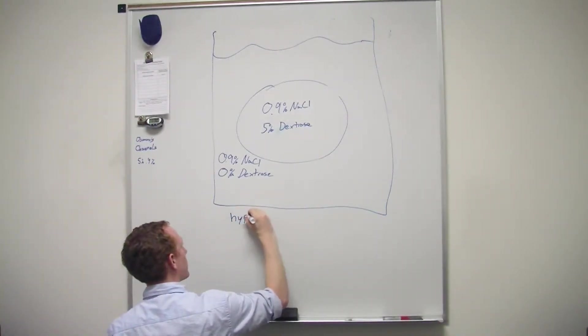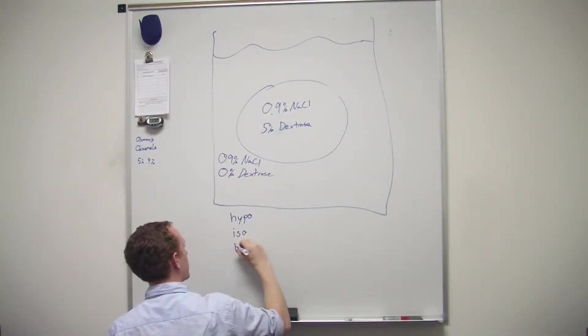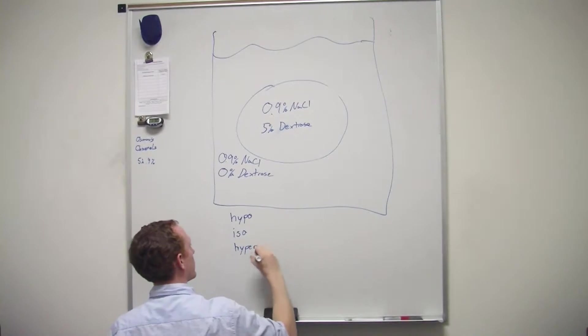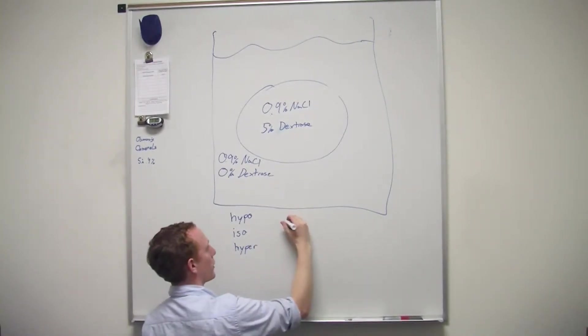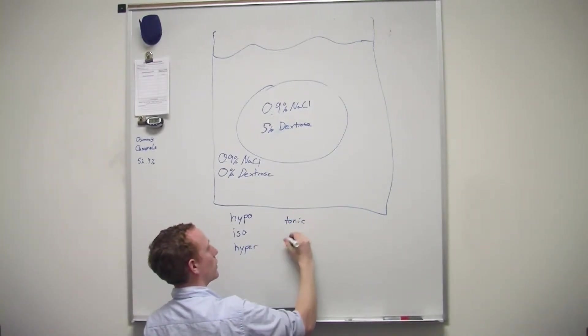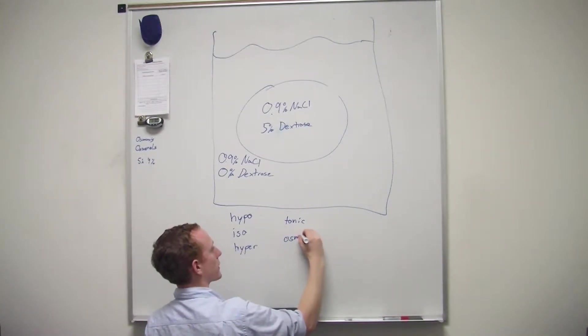Hypo, iso, and hyper. Hypo, iso, and hyper. Okay, so isotonic, and then you might have tonic or osmotic.